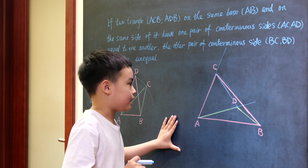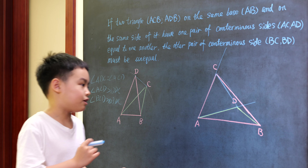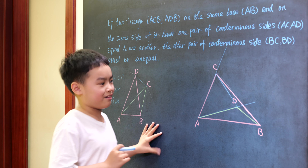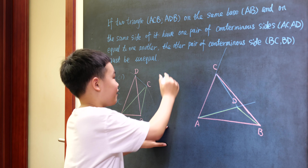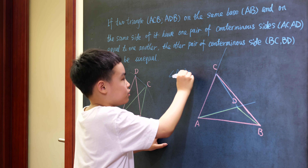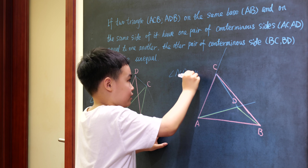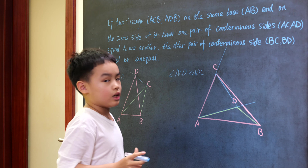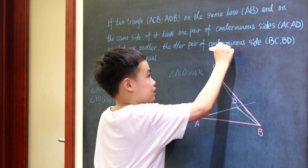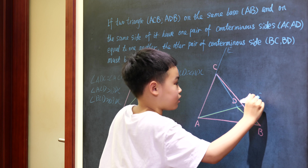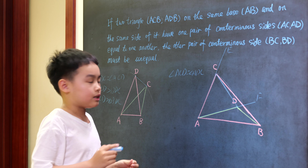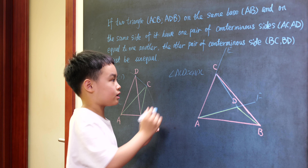Because AC is equal to AD, triangle ACD is equilateral. So angle ACD will again equal angle ADC. We have proved that the angles under the base CD should be equal to each other.